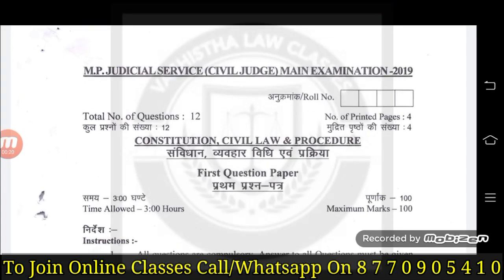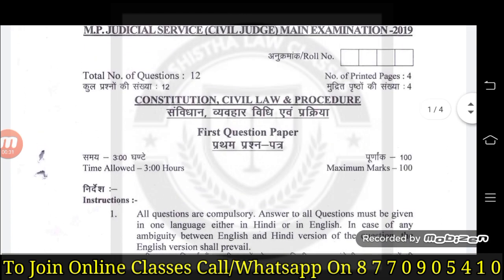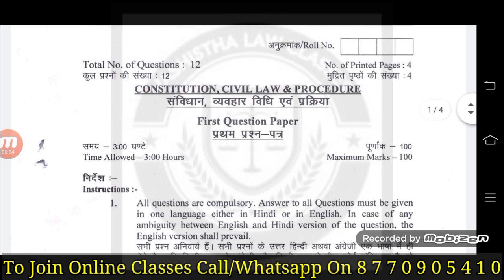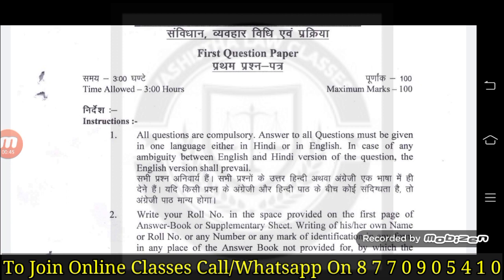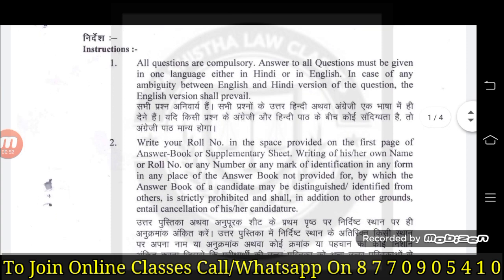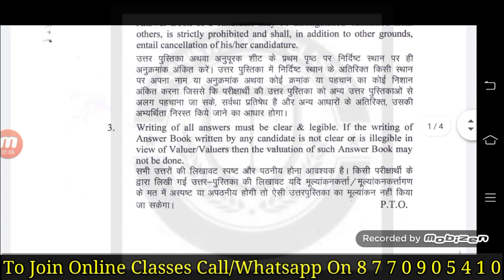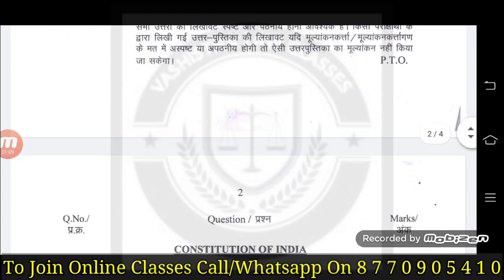यह देखें students, यह है MPCJ2 के mains exam का first paper, 2019 का। देखें, यह इसका first paper है - Constitution, Civil Laws and Procedure इसके बारे में पूछा जाता है। कुल प्रश्नों की संख्या 12 है और 3 घंटे का time रहता है। 100 marks का यह paper होता है। Instructions बताए गए हैं कि सभी प्रश्नों के उत्तर हिंदी अथवा अंग्रेजी एक ही भाषा में देने हैं। हिंदी और English दोनों को mix करके नहीं लिखना है। सभी questions attempt करना होते हैं।